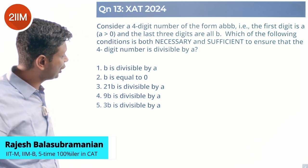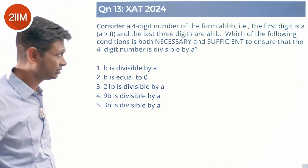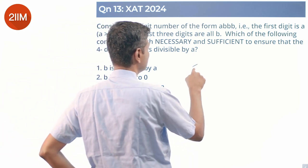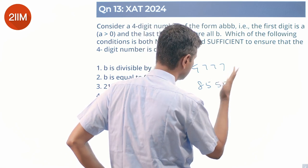Consider a four digit number of the form A triple B. The first digit is A and the last three digits are all B. So some number like 4777, 8555, something like this.